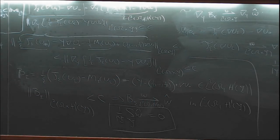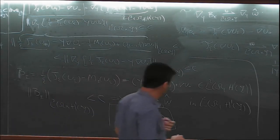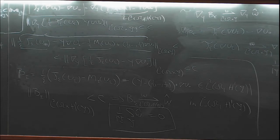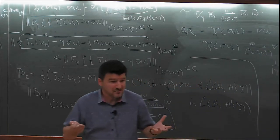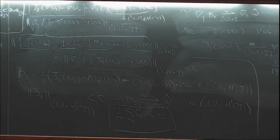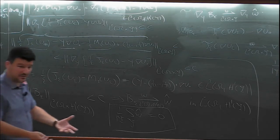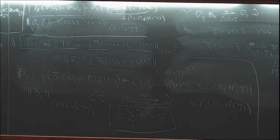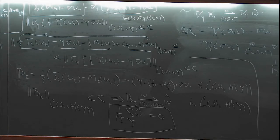We now have a weak limit, but I have no idea what ω̂ is. Passing to the limit and calling it a day is useless, because the whole purpose is to replace the composite with something computable and useful. At the end of the day, we need a limit problem with an identifiable coefficient or matrix. So we need to identify ω̂.